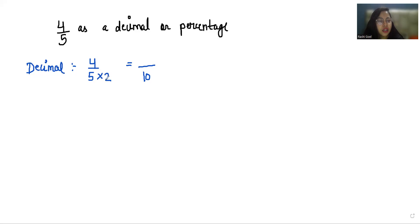If I'm making any change in the denominator, I have to make the same change in the numerator as well. So 4 times 2 is 8. 8/10 I now have to write in decimal form.